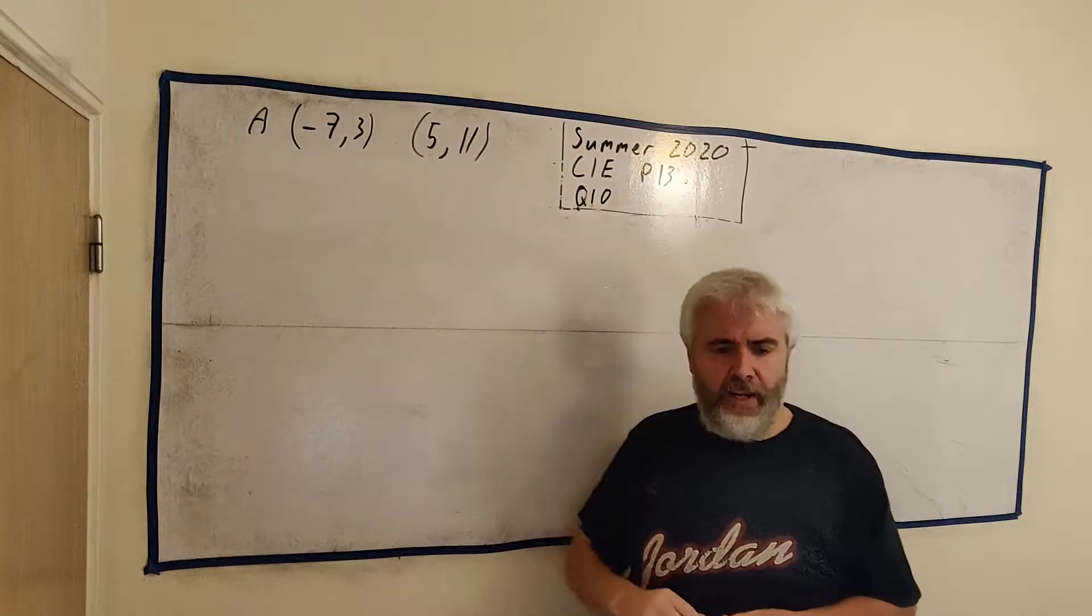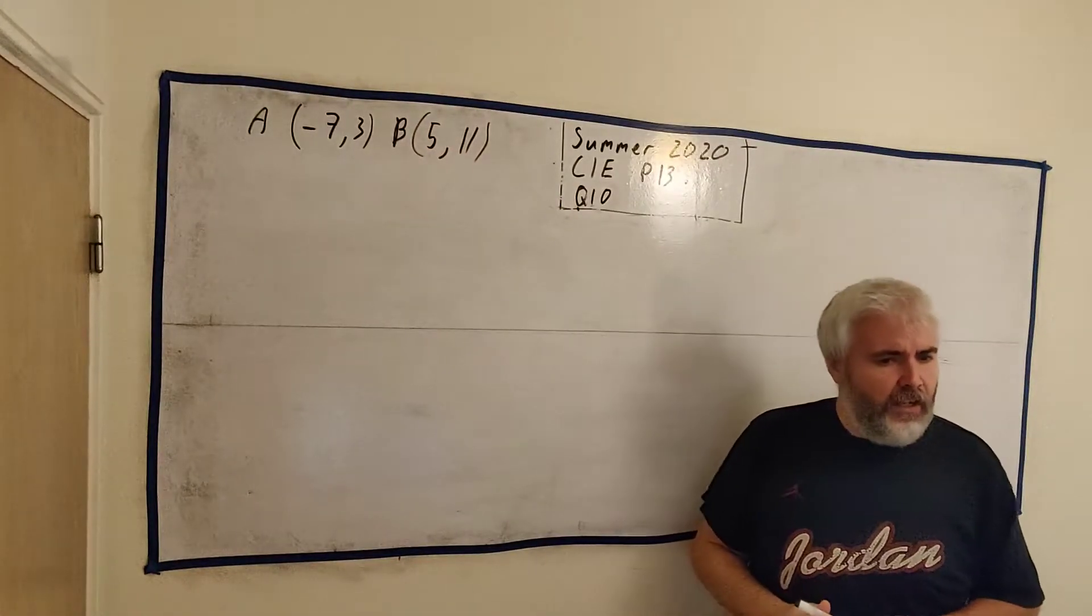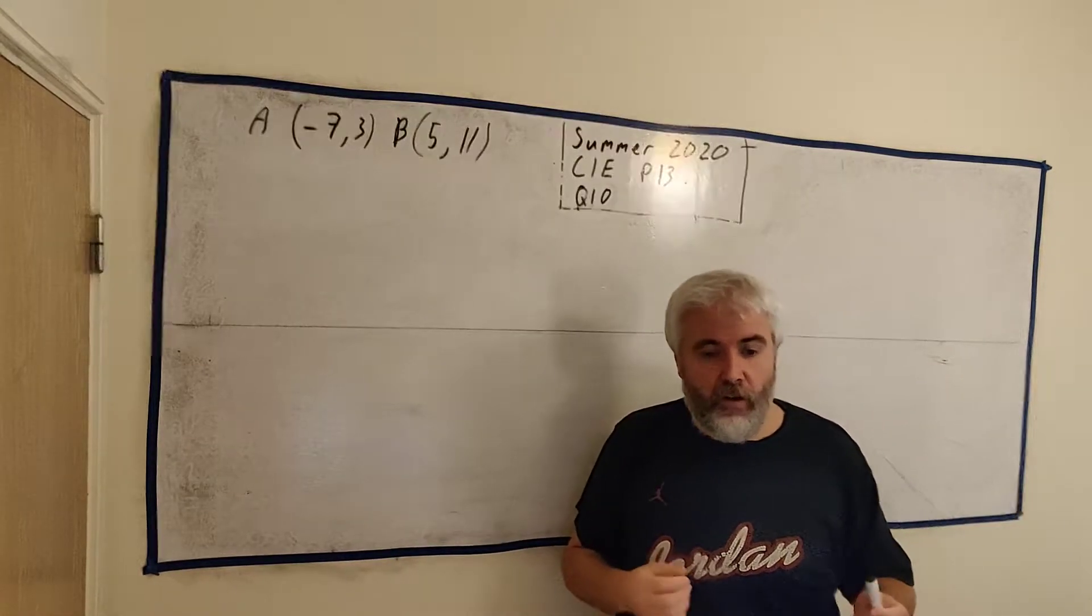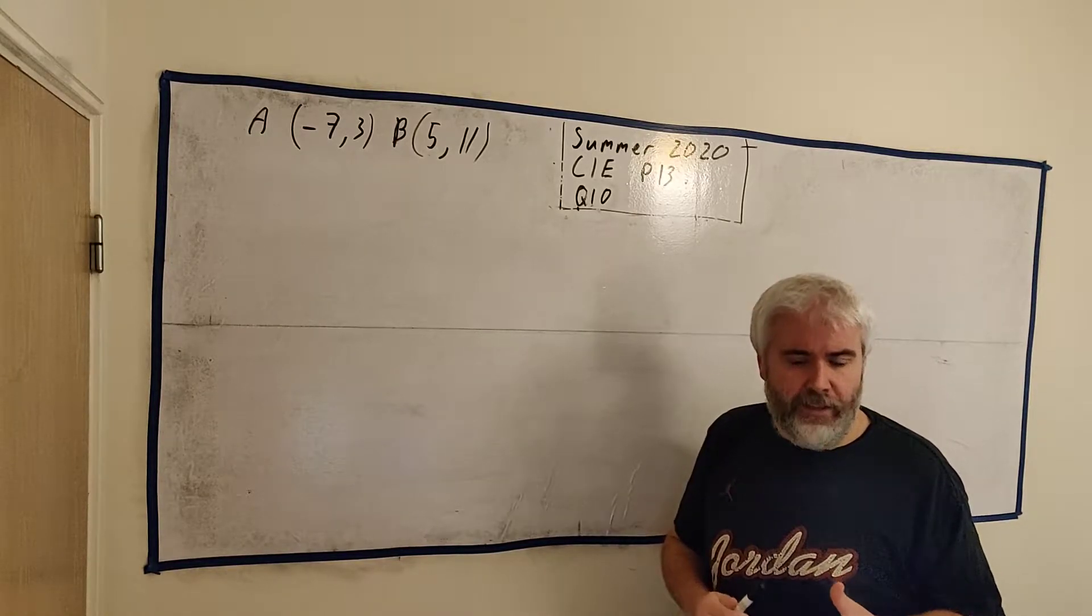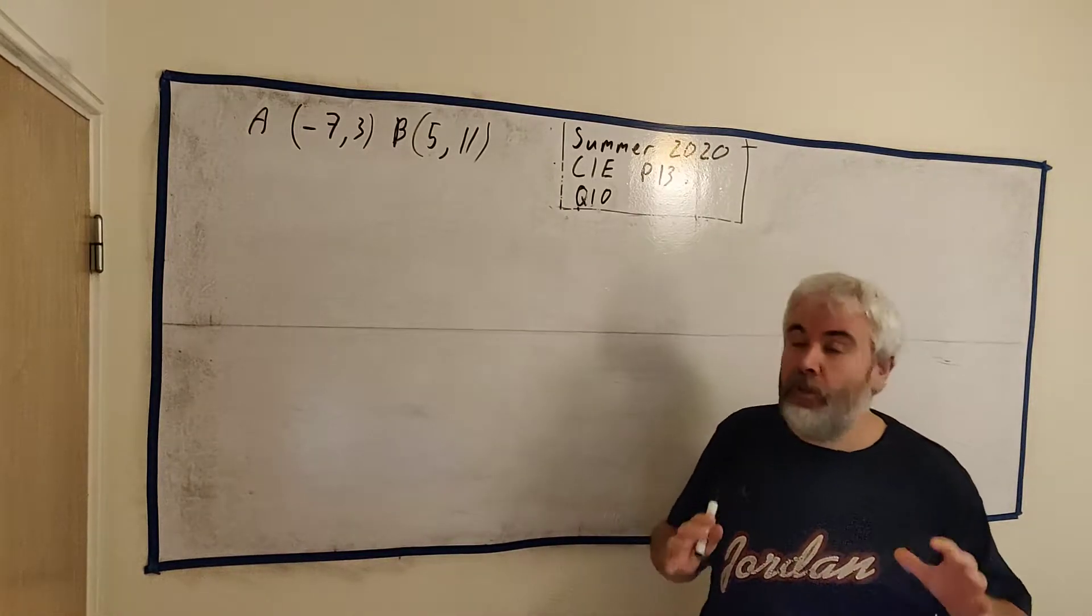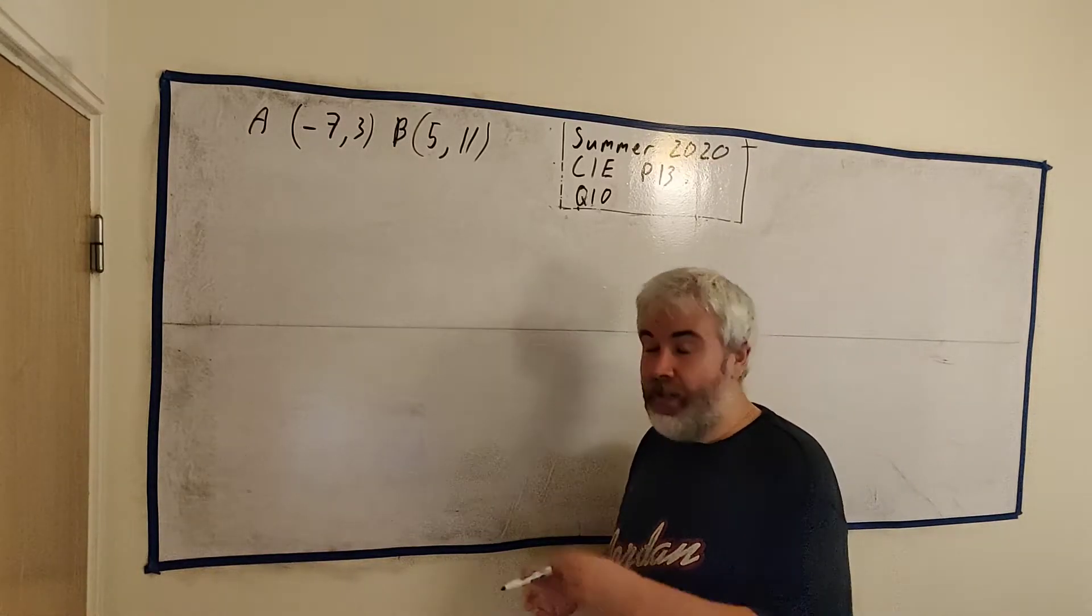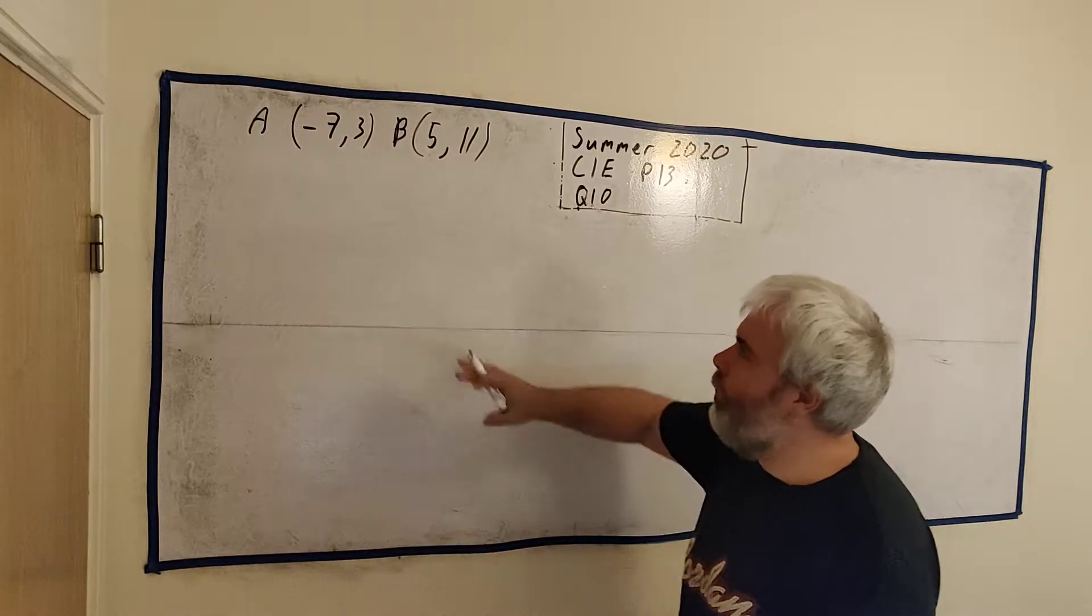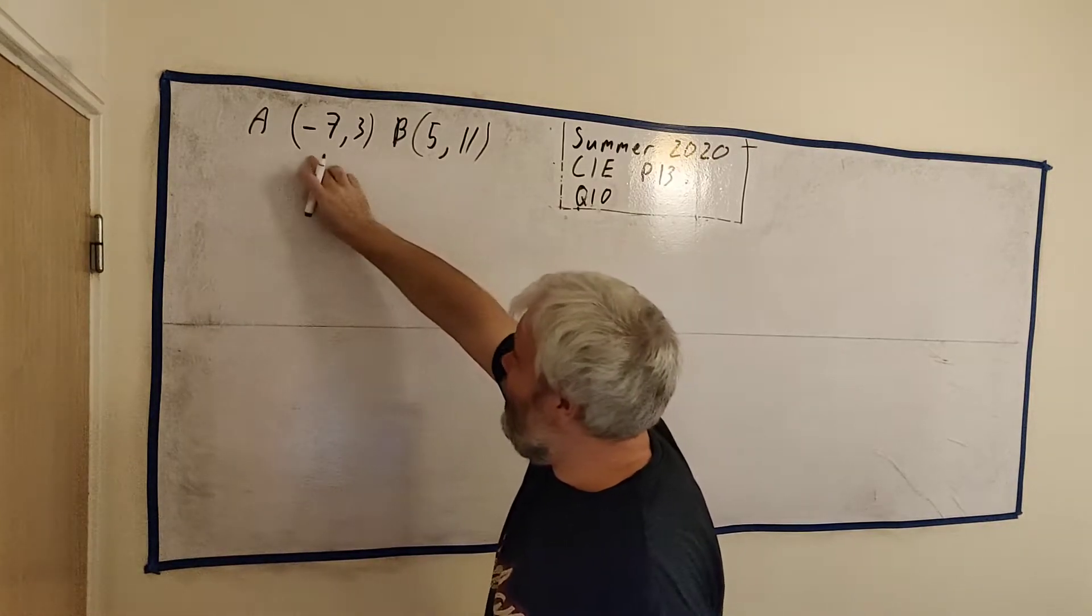The exam gives us these two points here, point A and this one here is B, and they ask us to show that the equation of the perpendicular bisector of AB is 3x plus 2y equals 11. Now that means we have to find that again, so you can sort of forget that. That's just something for you to check your answer by. Now it's a really good idea to draw what they're asking us to do.